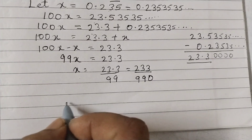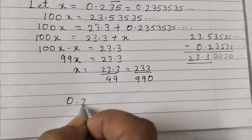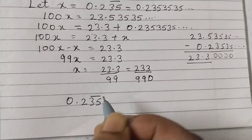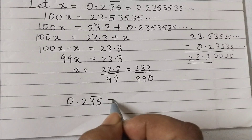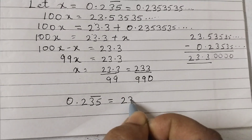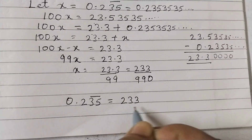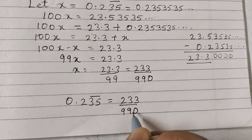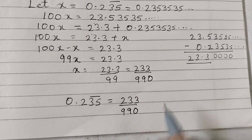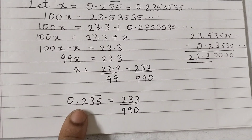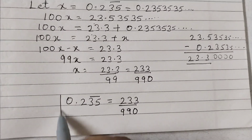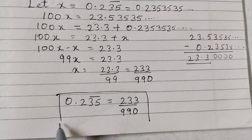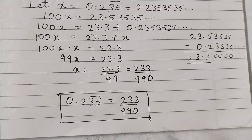So 0.235 with bar on 35 is equal to 233 over 990. This is the rational form of this decimal number. I hope this is clear to all. Thank you.